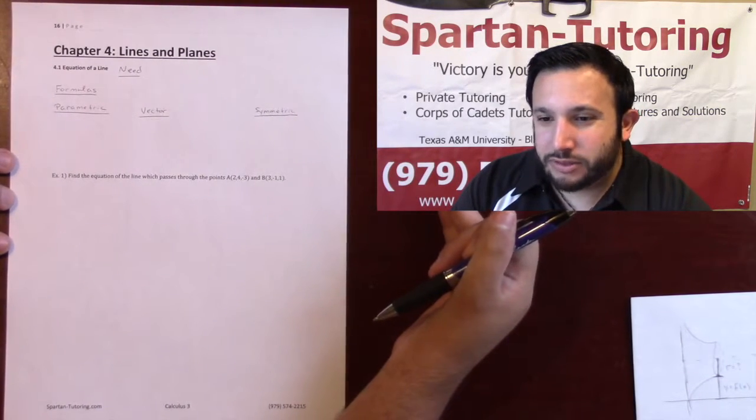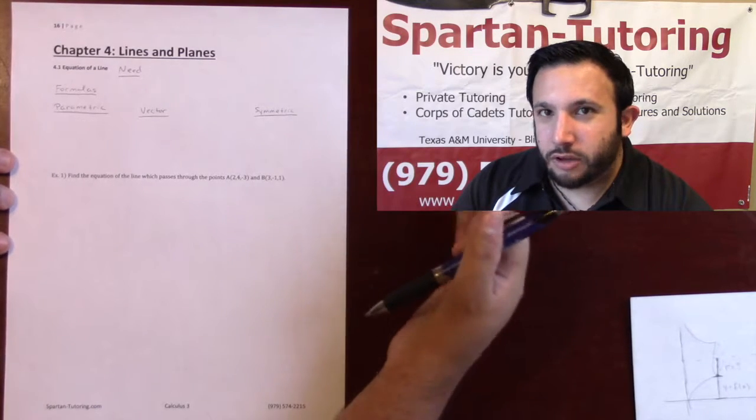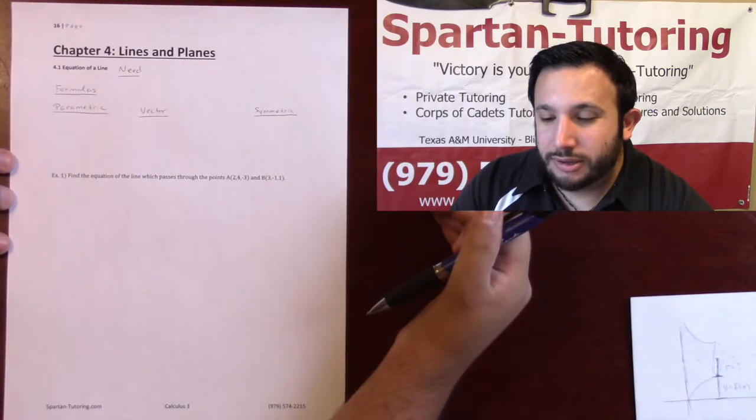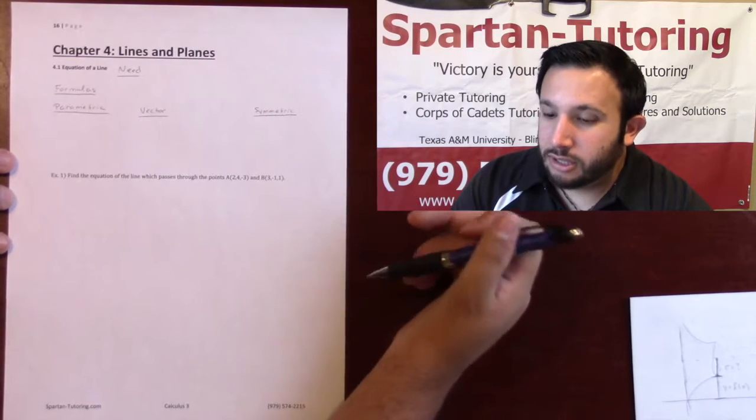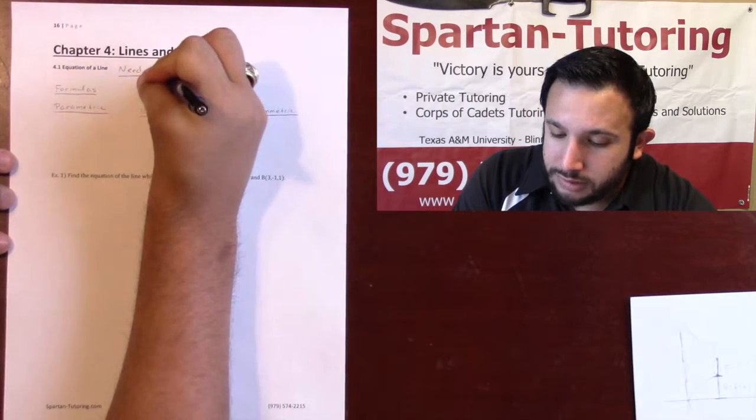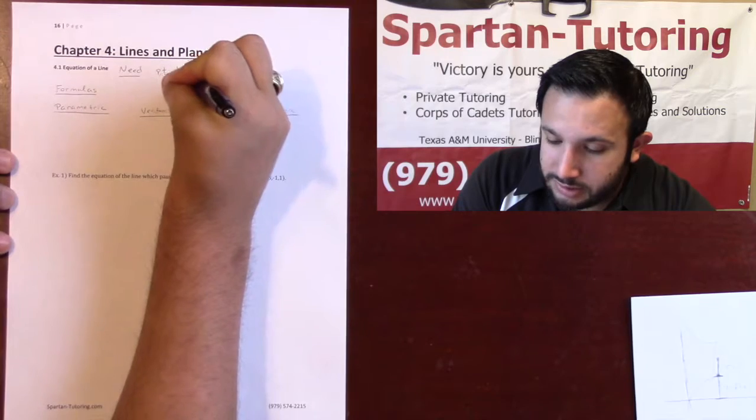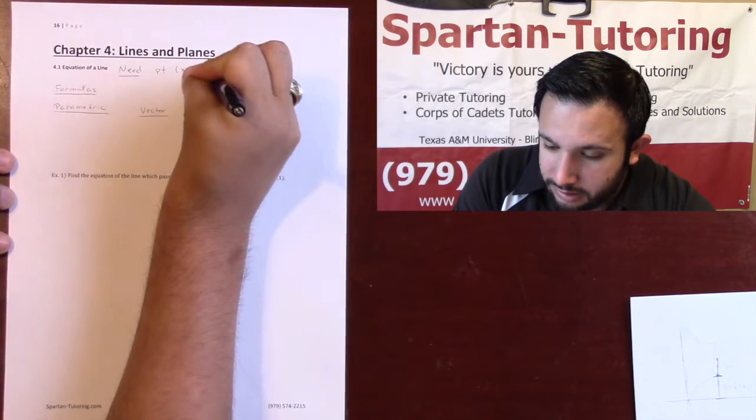Fast forward to your freshman, sophomore, or junior year in college, you're now taking Calculus 3. It's still the same thing. You still need a point, and we'll call this point x-naught, y-naught, z-naught,